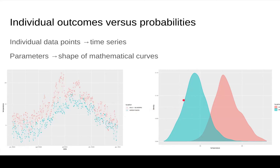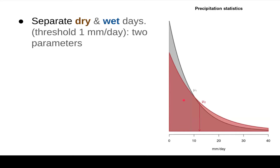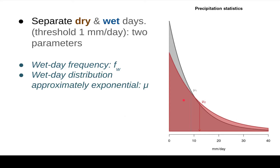We want to downscale these parameters directly rather than through the traditional way. Focusing on precipitation, we have wet and dry days, and different physical conditions are present on each. When it's dry, there's no rainfall. For the wet days, the distribution is approximately exponential. The exponential distribution has one parameter, mu, which is the same as the mean of the wet day amounts. This leaves us with two key parameters: the wet day frequency — how often does it rain, ranging from zero (never) to one (always) — and the wet day mean precipitation, which controls the shape of the exponential distribution.